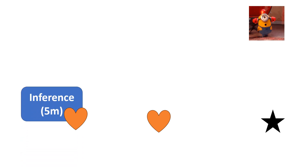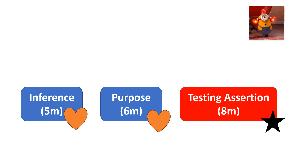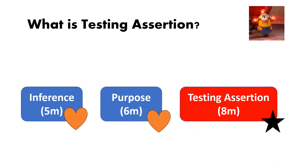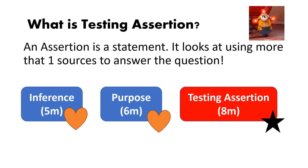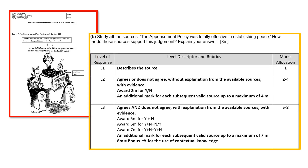So we have gone through inference and we have gone through purpose. Now we are looking a bit more into testing assertion. What is testing assertion? An assertion is a statement. It looks at using more than one source to answer the question. You have this worksheet with you — you can refer to it once you get back your file. In this worksheet it is really the LOMS — the LOMS means how you are marked.